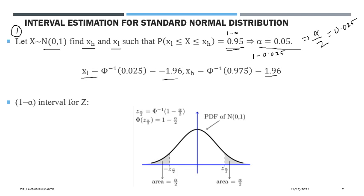For a standard normal random variable, the one minus alpha interval can be calculated directly from the normal table. Due to the symmetric nature of the standard normal distribution, if the upper limit is z-alpha-by-2, the lower limit is negative z-alpha-by-2. We only need to calculate one value and take the symmetric interval from negative z-alpha-by-2 to z-alpha-by-2.